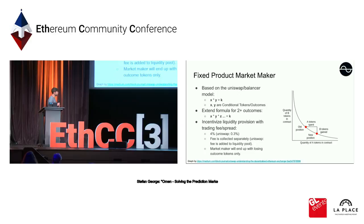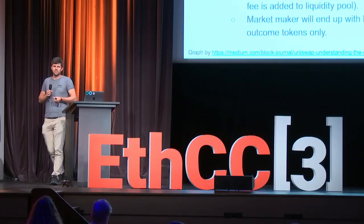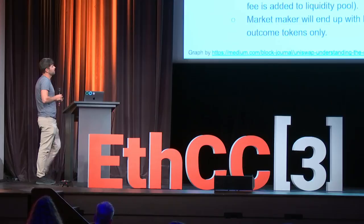In case someone adds liquidity and people are trading, the trading fee is collected in a separate balance, and as soon as the user wants to withdraw the liquidity, they get their share from the fees collected over that period of time. The fee is 4%, which is quite high, but still very competitive compared to other prediction markets — whether on Ethereum or with fiat money — and allows liquidity providers to break even if 25 times their liquidity contribution is created as trading volume.